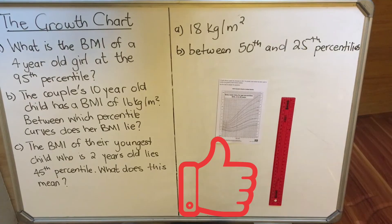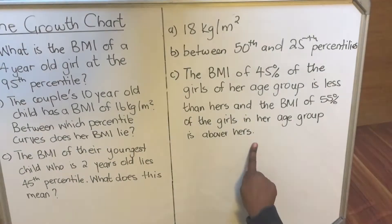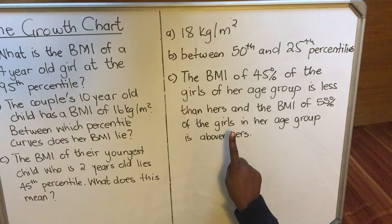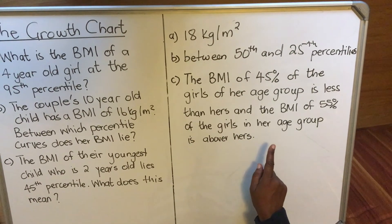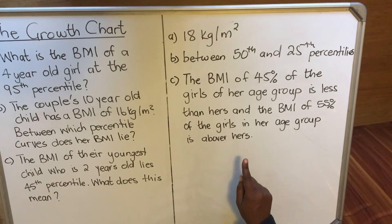Let's write that down. This is the answer. How we write the answer for C: the body mass index of 45% of the girls in her age group is less than hers, and the body mass index of 55% of the girls in her age group is above hers.